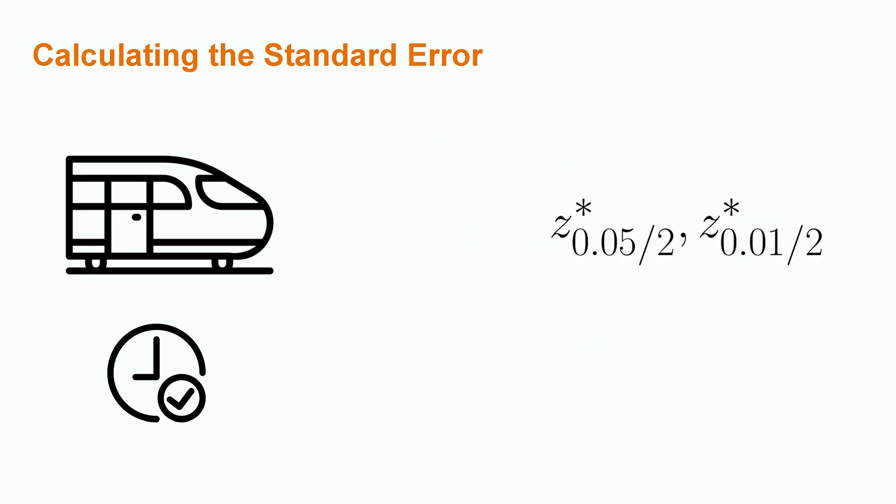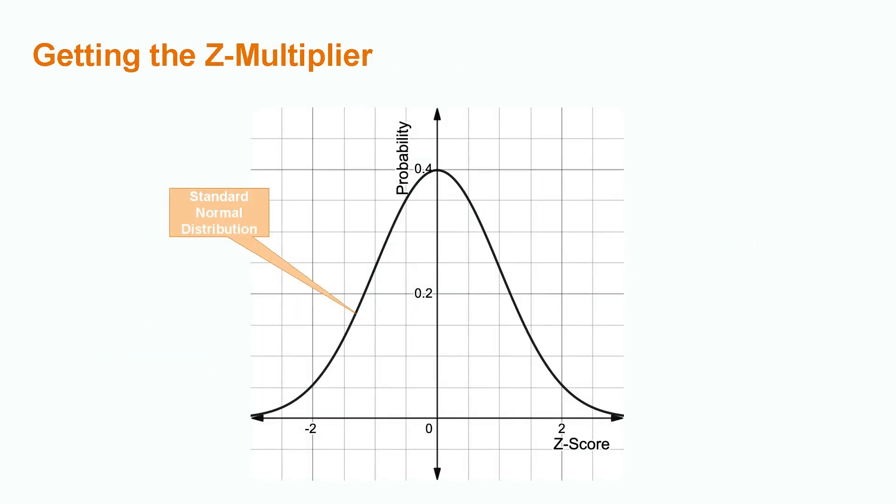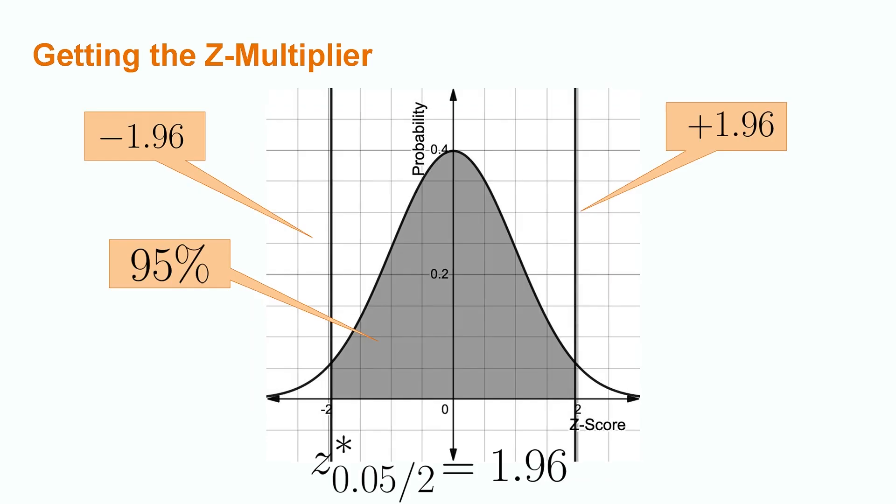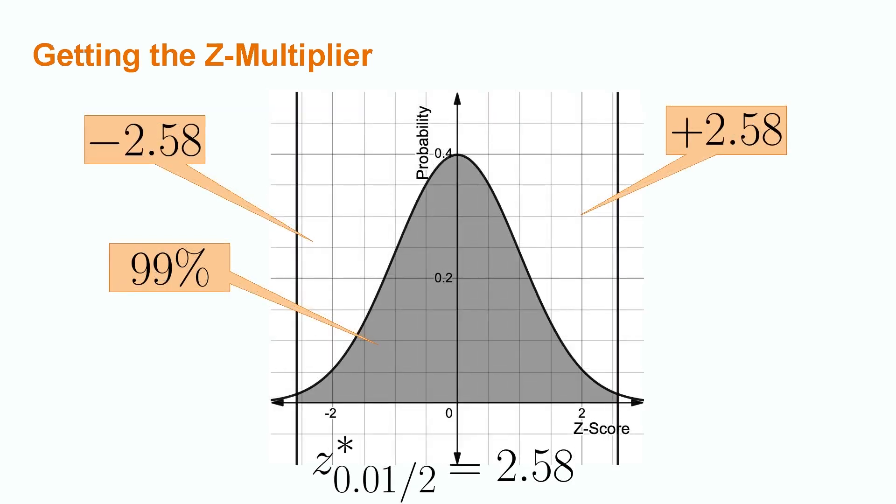Next, we have to determine the value of the z multiplier for both the 95% and 99% confidence levels. The notation of z-star with the corresponding significance level divided by 2 is just notation to indicate that we are looking at a two-tailed significance level. We get the appropriate values by consulting a standard normal distribution. To find the z-score for a 95% confidence level, you need to find the value of the z-score that shades in 95% of the interior of the standard normal distribution. This happens at a z-score of approximately plus or minus 1.96. We'll take a z-multiplier of 1.96 for the 95% confidence level. If we repeat the process for the z-multiplier of the 99% confidence interval, we will find a z-score of 2.58.